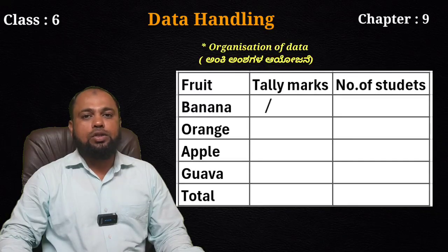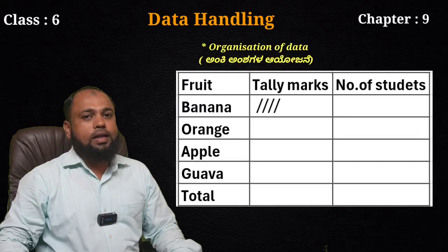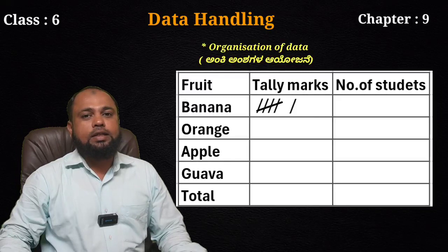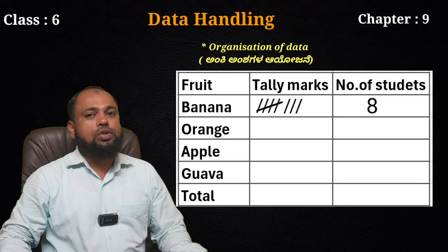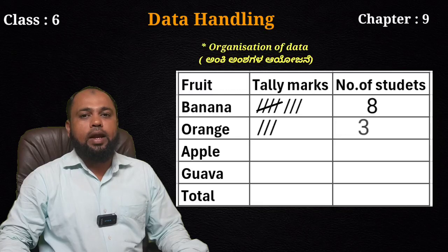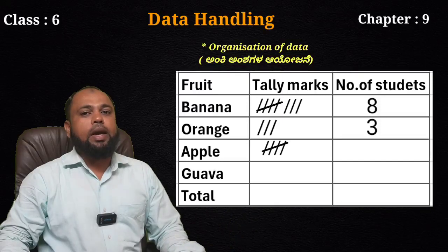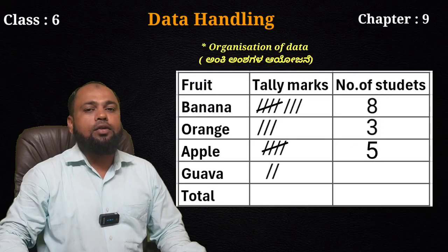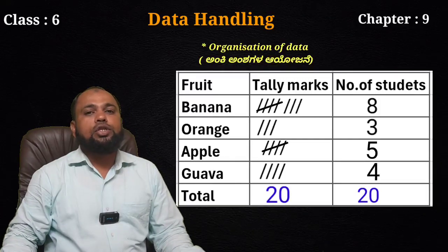Counting: 1, 2, 3, 4 — after the 4th mark, the 5th one is marked crossing through, making a group of 5. With the help of these tally marks, we can get the information very quickly and in a very simple manner.